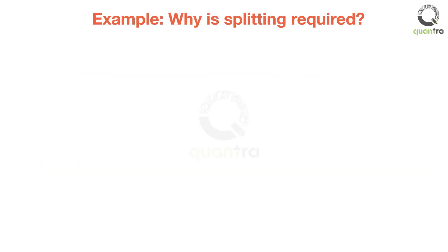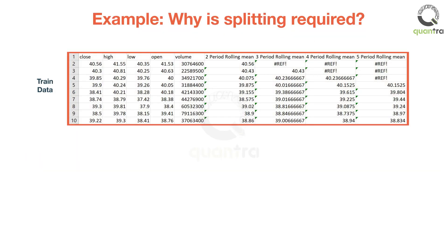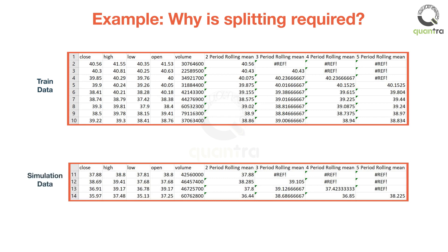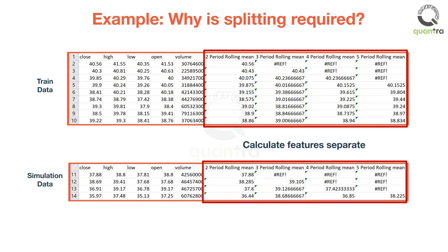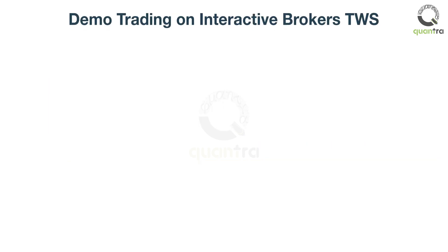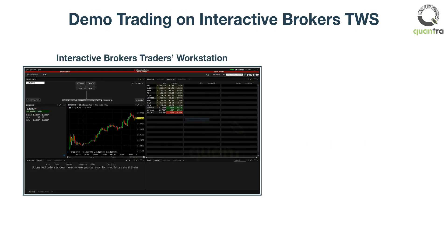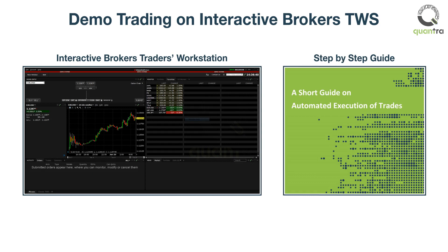The best way to avoid this data leakage is to create the features and target data sets separately for the train and the simulation data, as shown here. You can also run a demo of the machine learning model in the Interactive Brokers TWS environment by using the iBridgePy library. Please read a short guide on automated execution provided in the next section to install the TWS and iBridgePy.